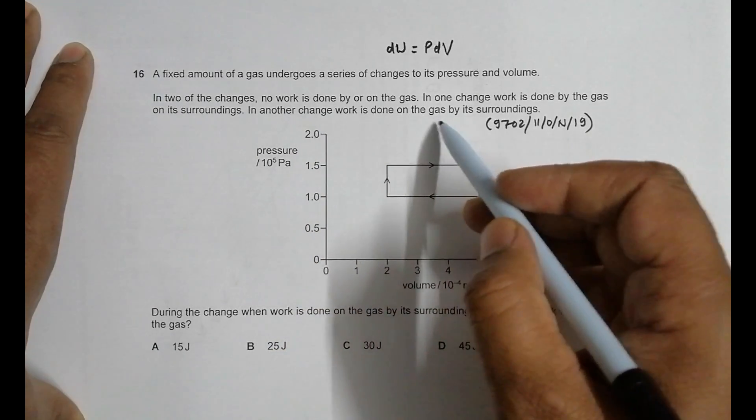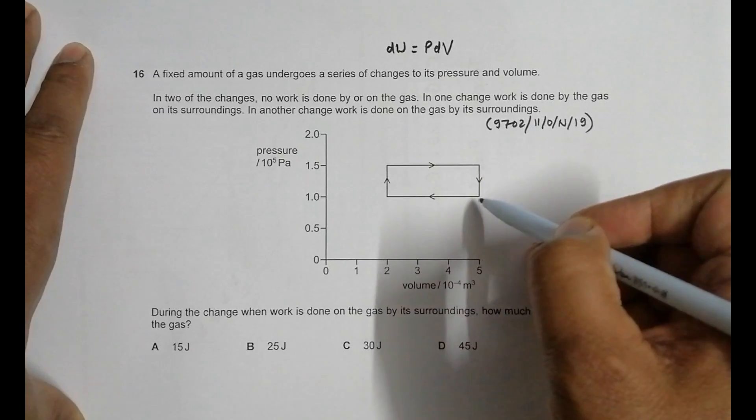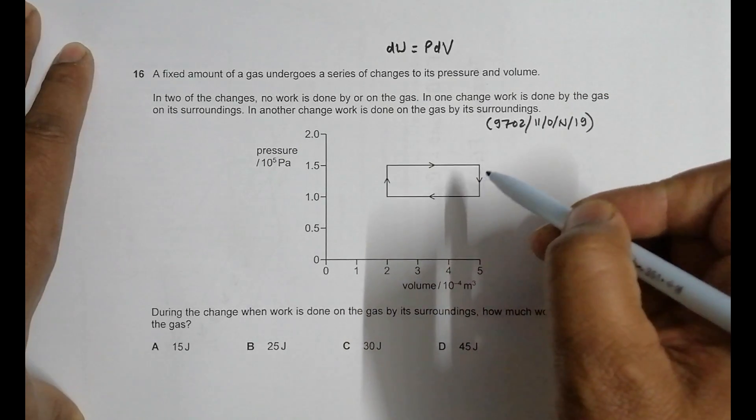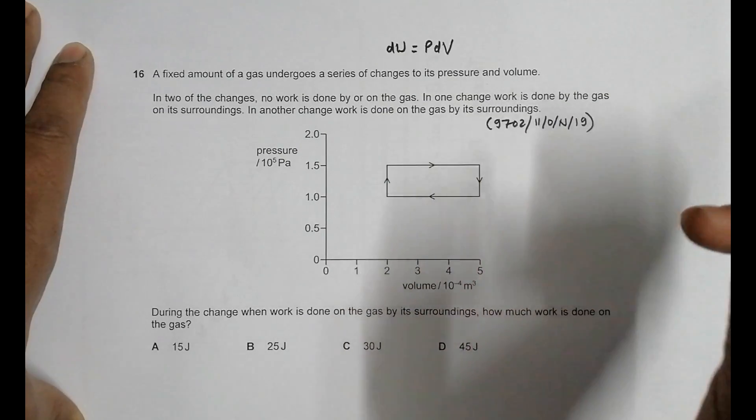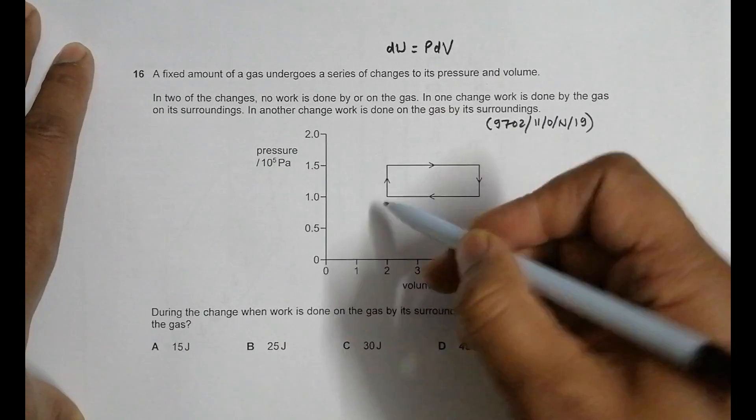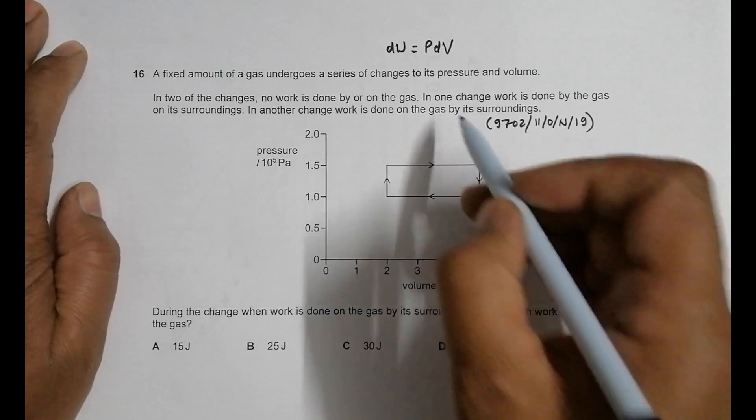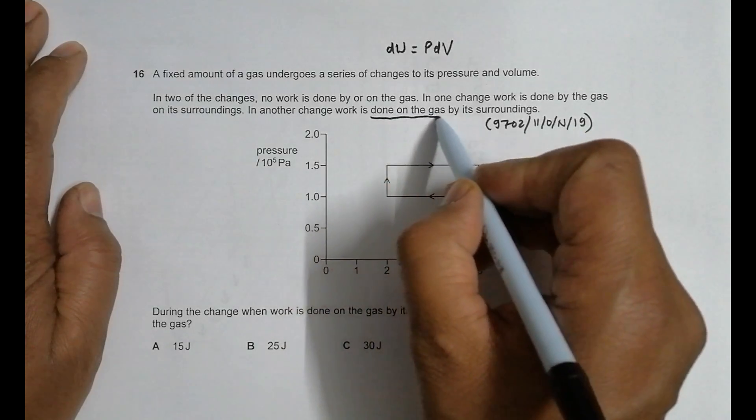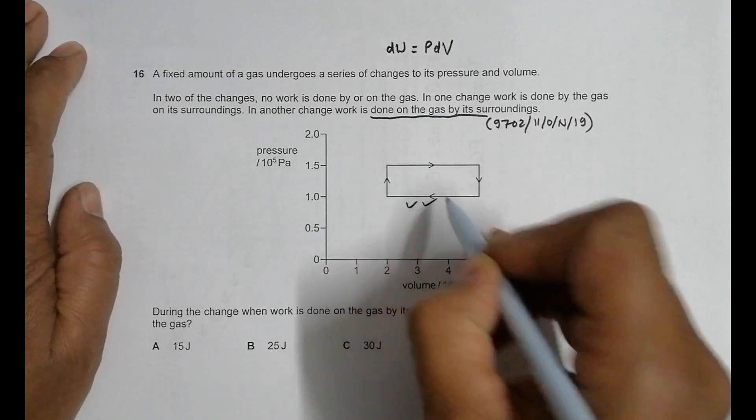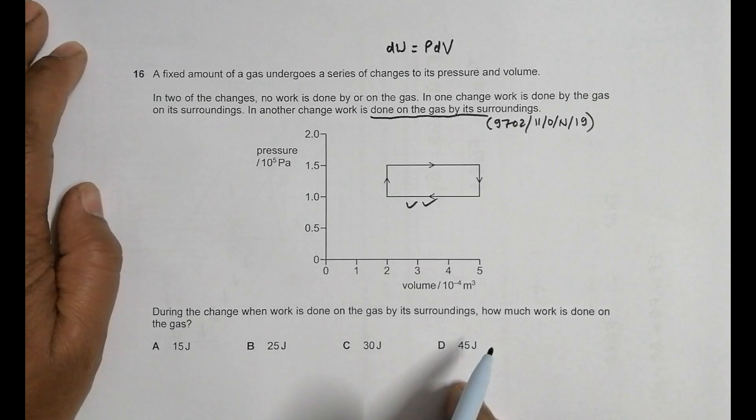In another change, work is done on the gas by the surroundings. The surroundings are pushing it, causing the volume to decrease. So during the change when work is done on the gas by the surroundings, this is the change we need to analyze.